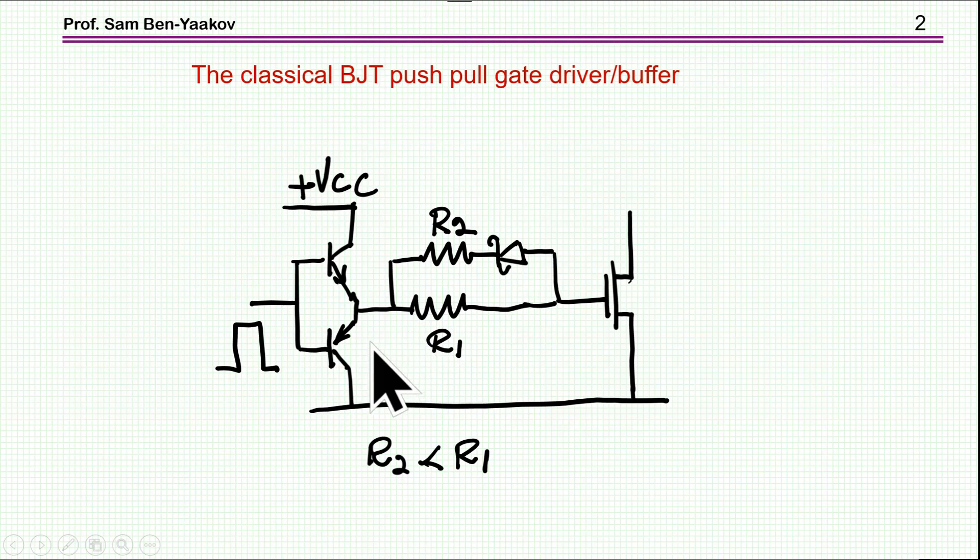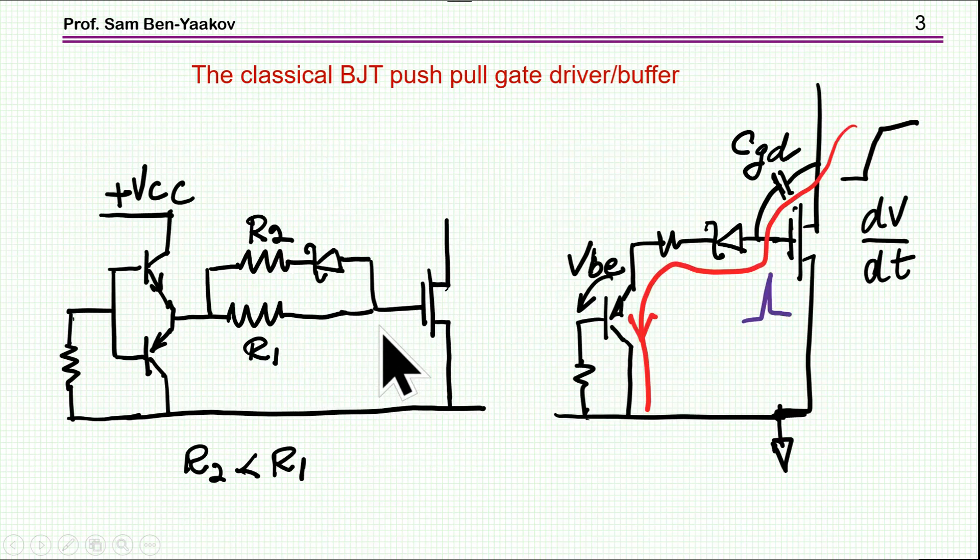Now, the BJT push-pull does have some disadvantages, some deficiencies, and in particular, there is a problem of voltage drops. First of all, one has to recognize that these transistors are not in a saturation region and that they are operating in a linear region.